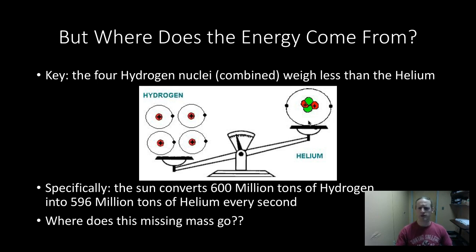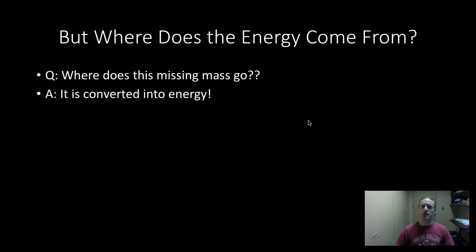But here's the thing, though. Where does this mass go? What happens? How is the sun able to literally just destroy mass? And this is a really important thing. Turns out that as it destroys the mass, that mass is actually converted to energy. Mass can be turned into energy. You can destroy mass. You are allowed to destroy mass, but you need to replace it with energy.